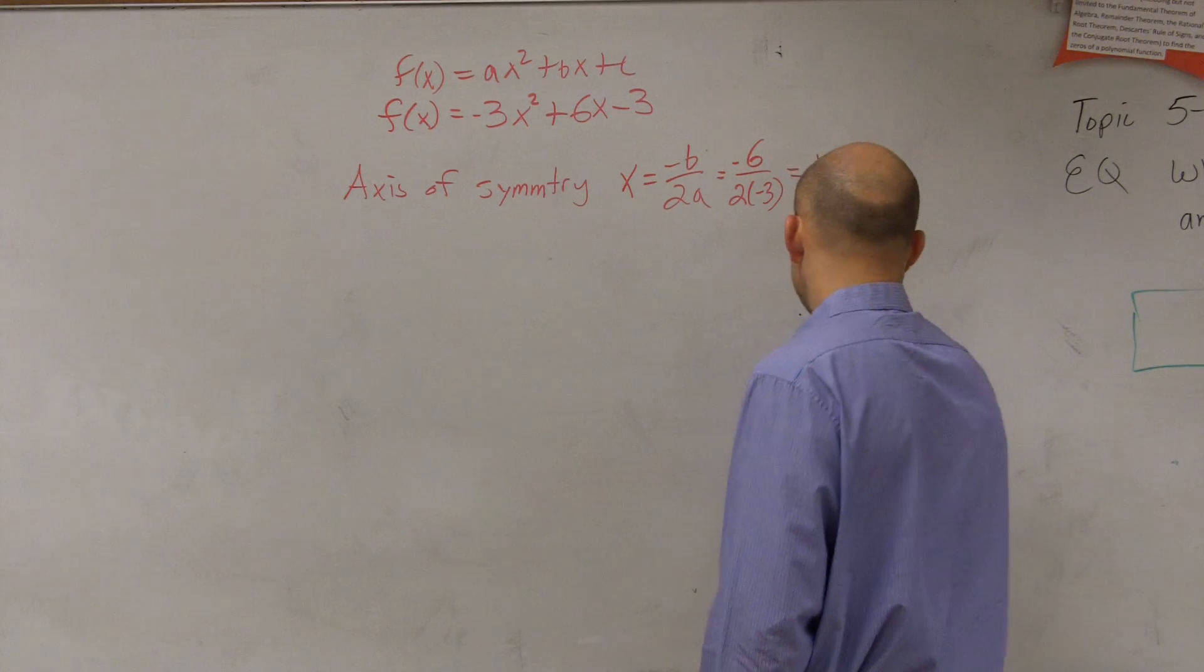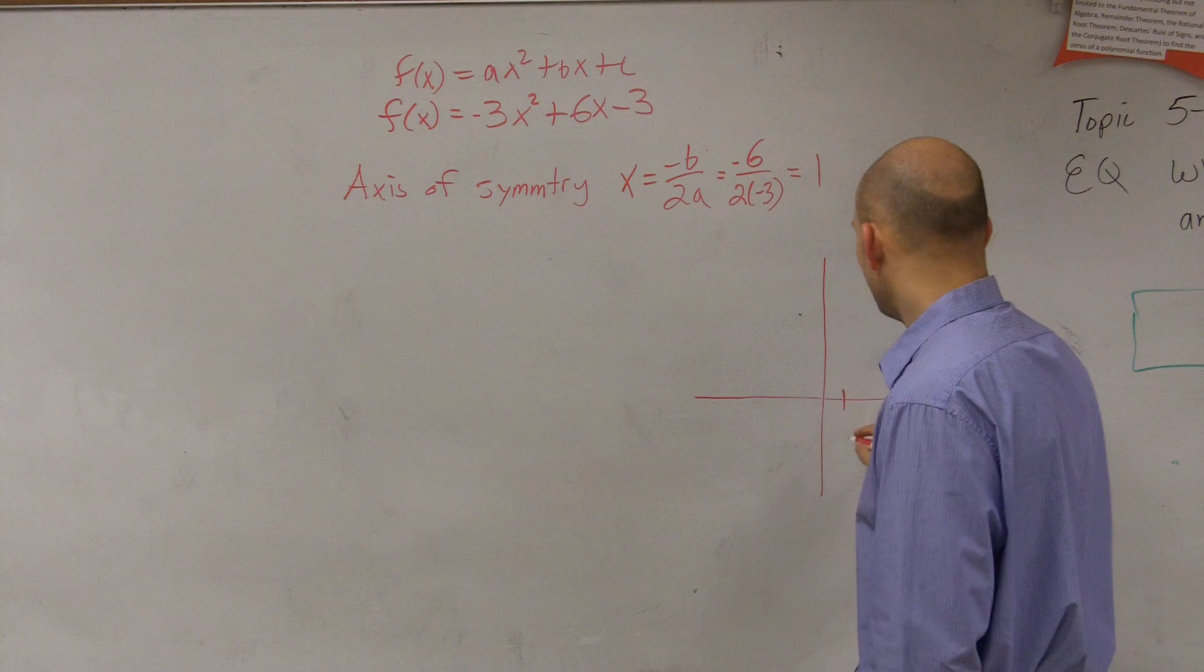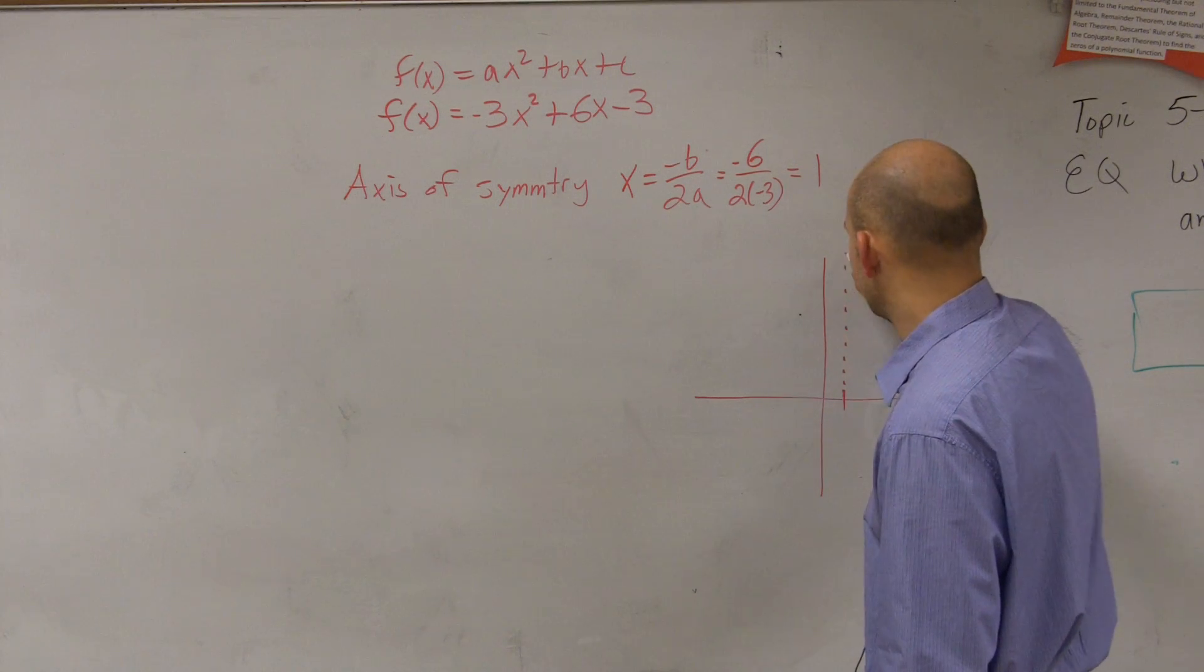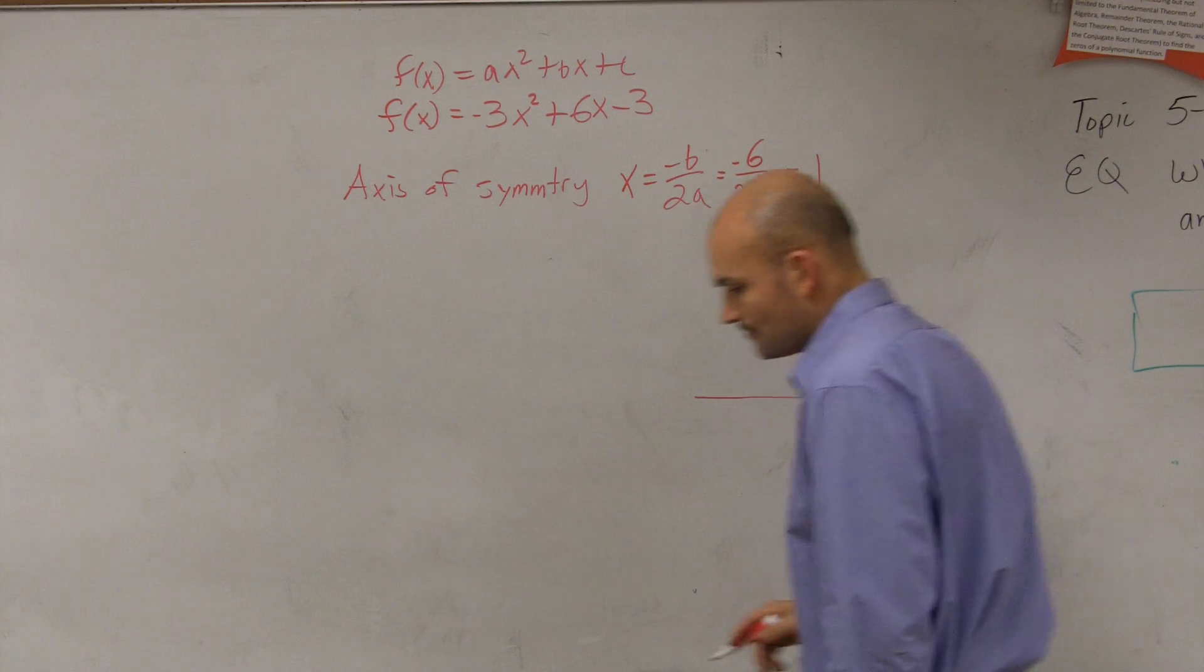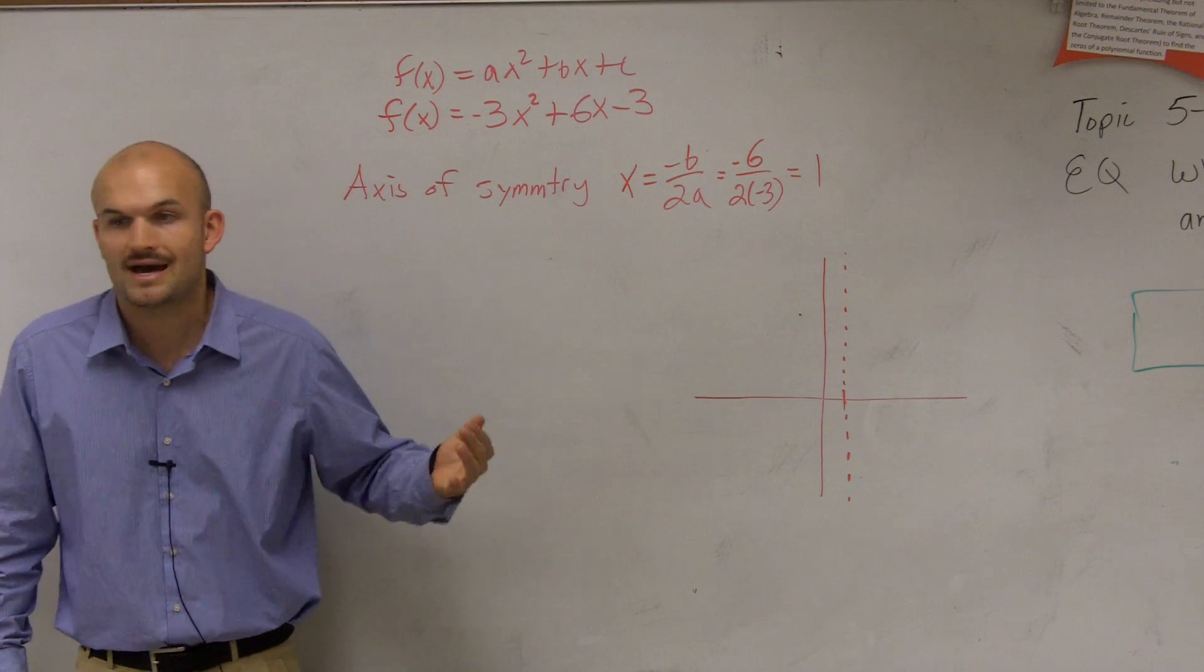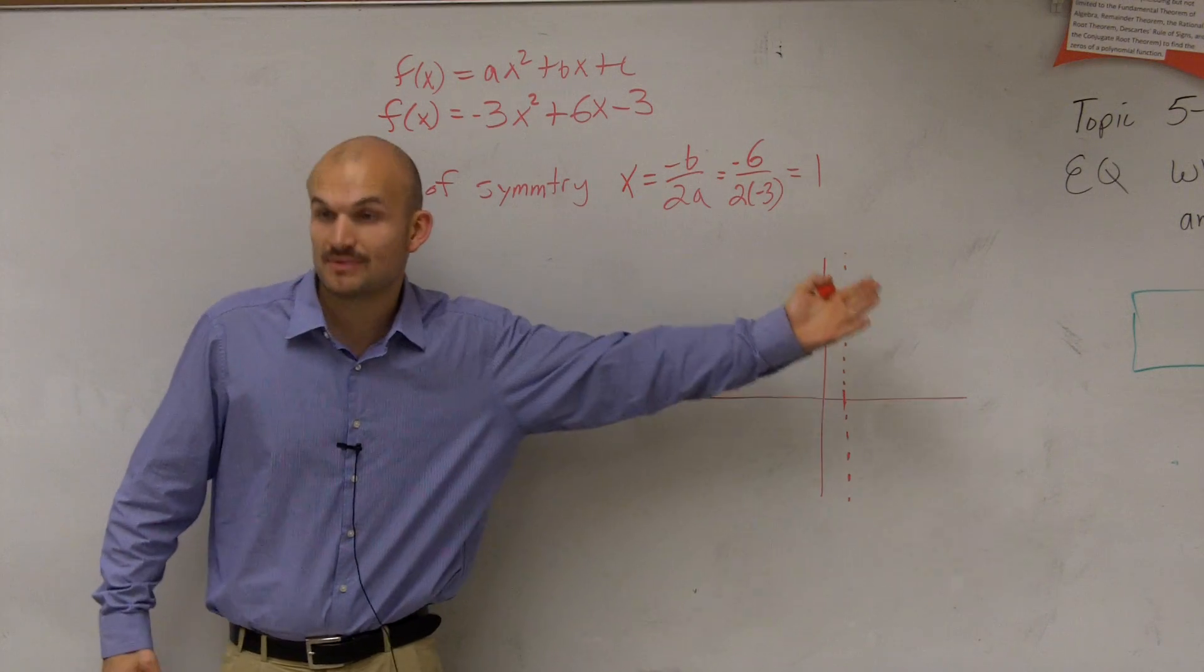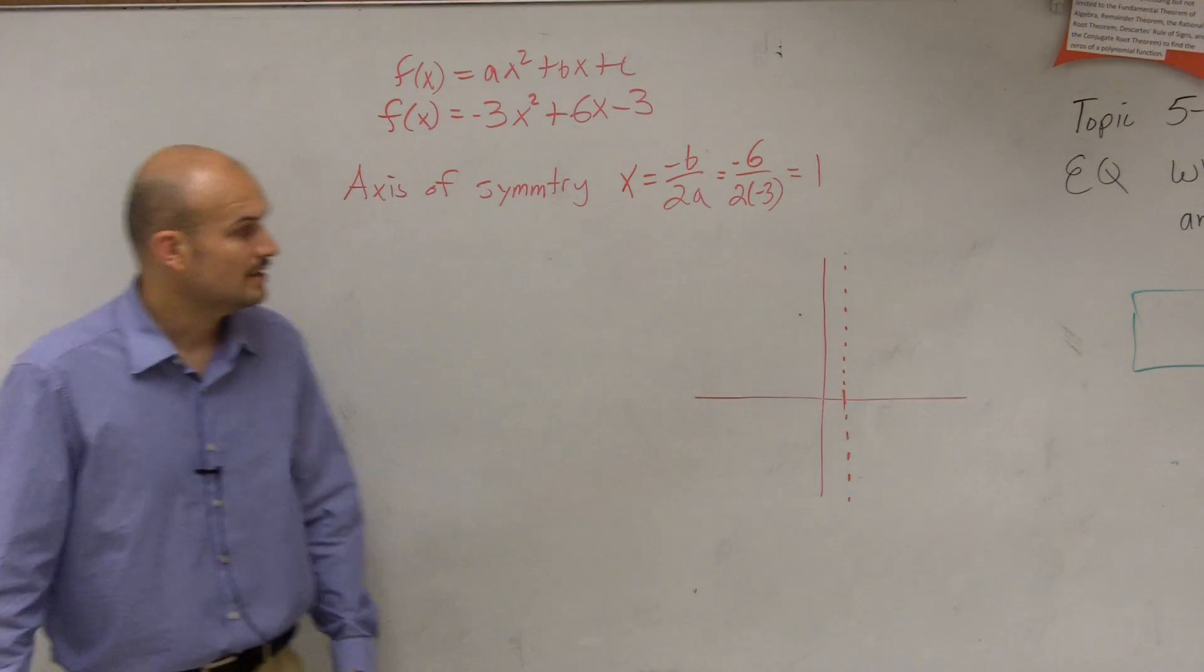So what I'm going to do is I'm going to graph that right here because it does ask us to graph it. So I go over to 1, and I draw a vertical dotted line. Now, what that tells us is that is going to cut our parabola in half. Half of my parabola is going to be one side on the axis of symmetry. The other half of my parabola is going to be on the other side.